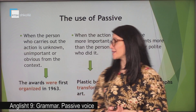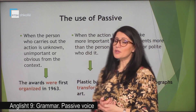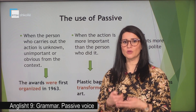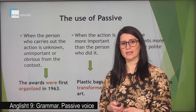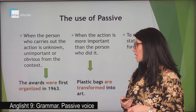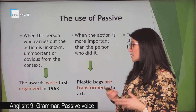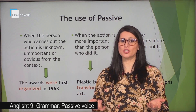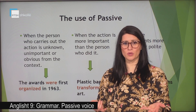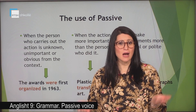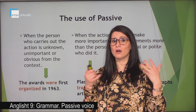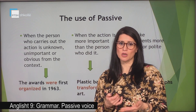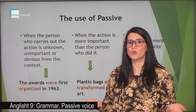When do we use the passive? When the person who carries out the action is unknown, unimportant, or it is obvious by the context. What does it mean? Let's have a look at the sentence: awards were first organized in 1963. Here it is not mentioned who organized the awards because it is unimportant, or because it can be obvious by the context — it is known who organizes the awards.